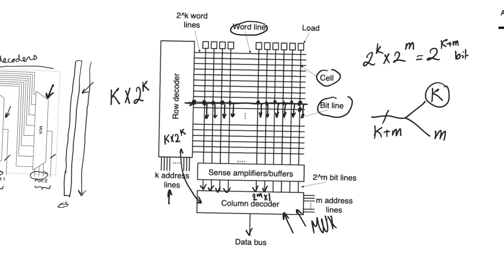The memory array consists of two parts: the core, which contains the storage cells, and the accessory circuits. What distinguishes memories from random logic is that the majority of the array consists of repeated elements — every cell looks exactly like its neighbors. We spend a great deal of effort designing a single cell, because that cell is replicated 2^(m+k) times. Even a small reduction in cell area results in a large reduction in total array area.